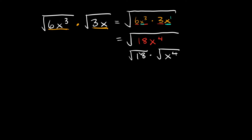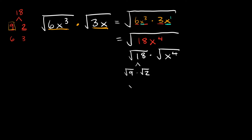The square root of 18 — that's not a perfect square, but we can break it down into its factors. I can break 18 into 9 times 2. We could also use 6 times 3, but I want to use 9 times 2 because 9 is a perfect square, and including perfect squares simplifies the math a lot. So the square root of 18 breaks down into the square root of 9 times the square root of 2. The square root of 9 is 3, so the square root of 18 equals 3 root 2. Now multiply that by the square root of x to the fourth. The square root of x to the fourth is simply equal to x squared.